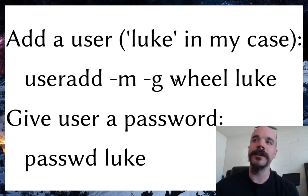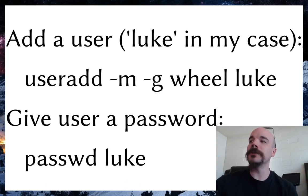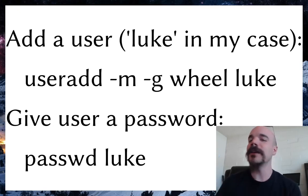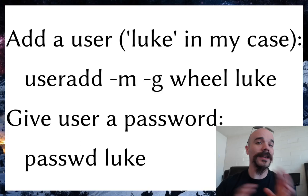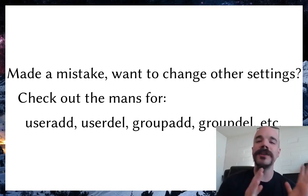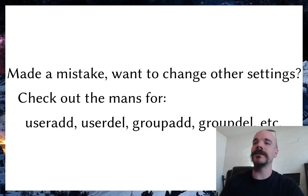Usually you'll add your user, create the home directory, and add it to the wheel group — that's convention and it's already built into the sudoers file. Once you've created your user, you'll want a password. Running `passwd` followed by your username will prompt you to set a new password. That's all you need to do to add a user, though there's more to do for permissions.